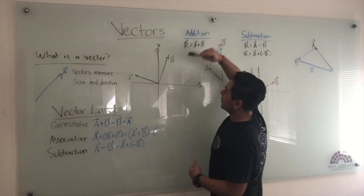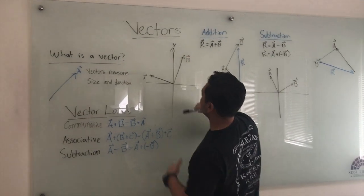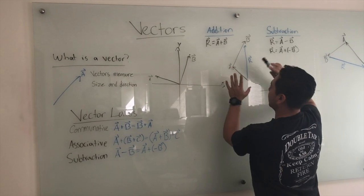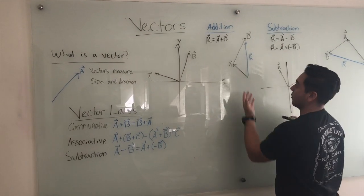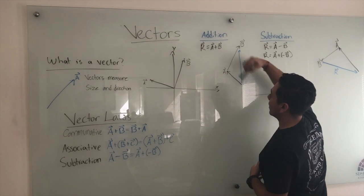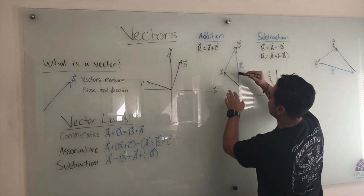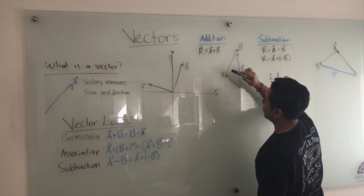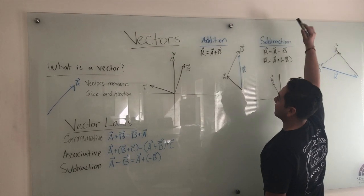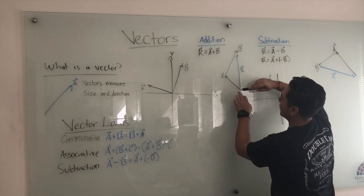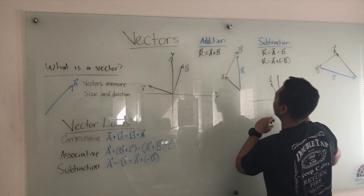So you graph your a and you graph your b, and it's easier if you put it on a plain sheet of paper or here on a whiteboard. So you draw your a vector wherever you'd like, and you get your b vector. You put it at the tip of a, you draw your b vector, and then your resultant vector is what you're adding, which just connects from the tail to the head.